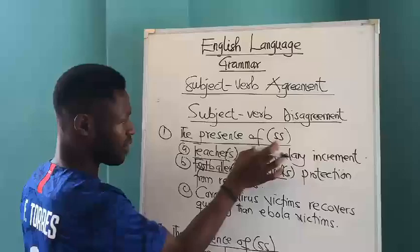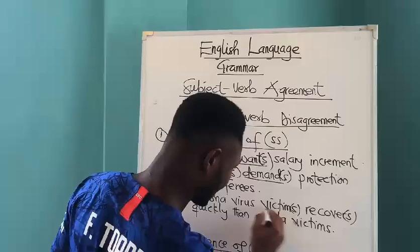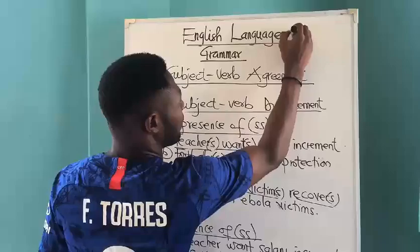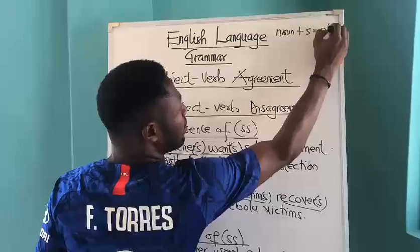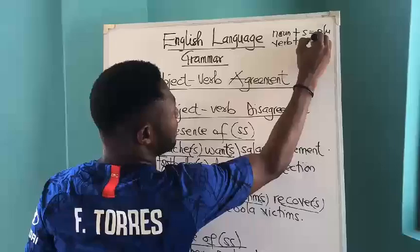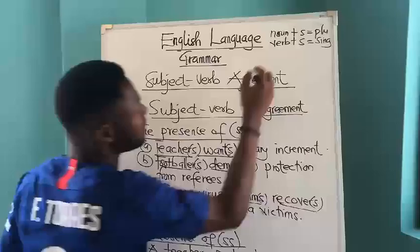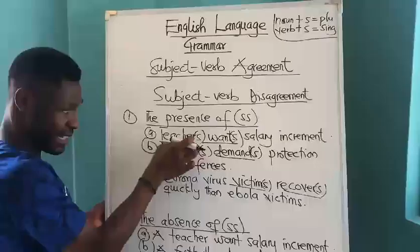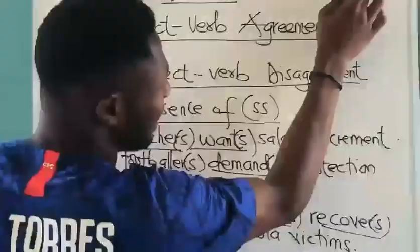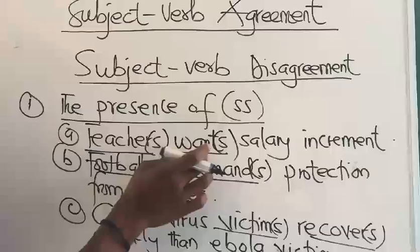Here we have the presence of double S — S on the noun and S on the verb. Now, it will interest us to know that when it comes to concord: a noun plus S is plural, while a verb plus S is singular. So you see that the two are inversely related. When you add S to a noun — like teacher becoming teachers — it is plural. When you add S to a verb, it becomes singular.